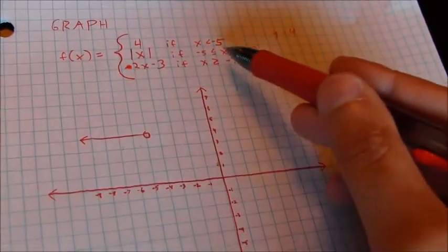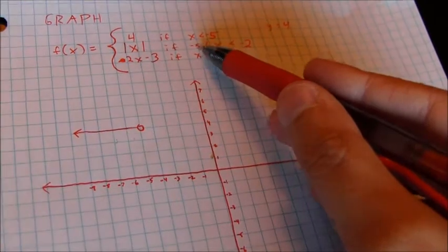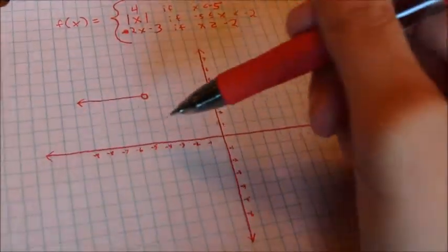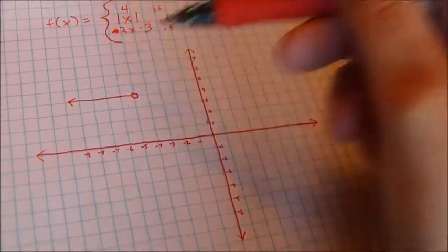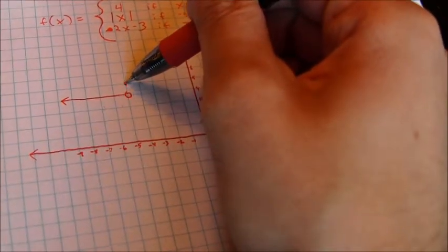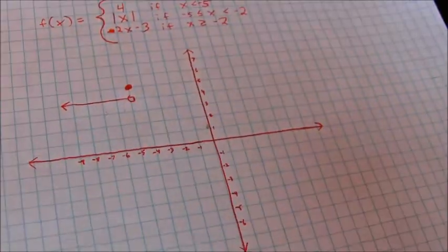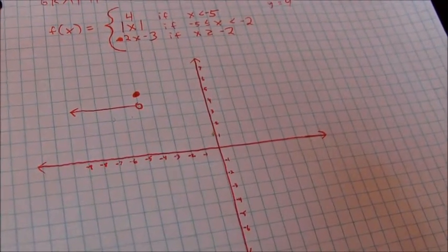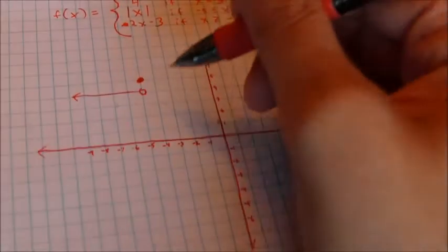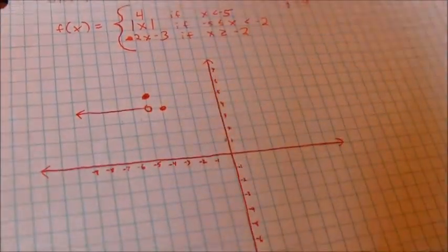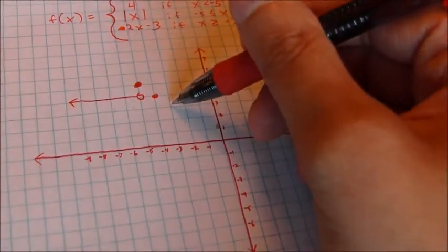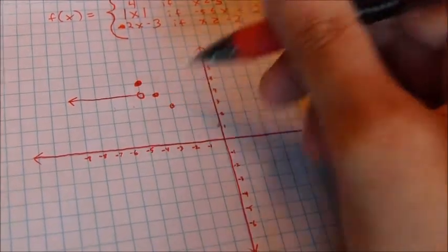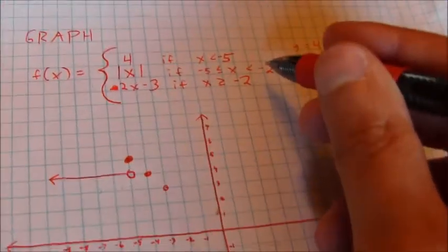For example, I want to know where it goes at negative 5, because x can be equal to negative 5. So the absolute value of negative 5 is 5. So I go up to 5 when x is negative 5, and I make a solid dot there. When x is negative 4, y is positive 4. When x is negative 3, y is going to be 3.